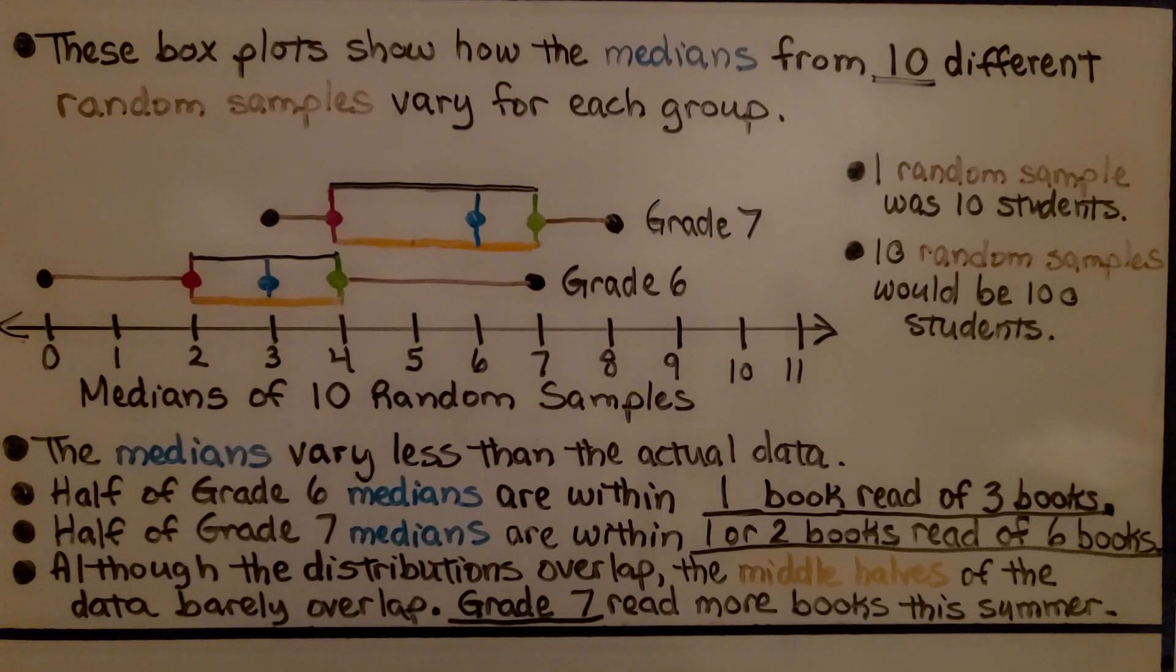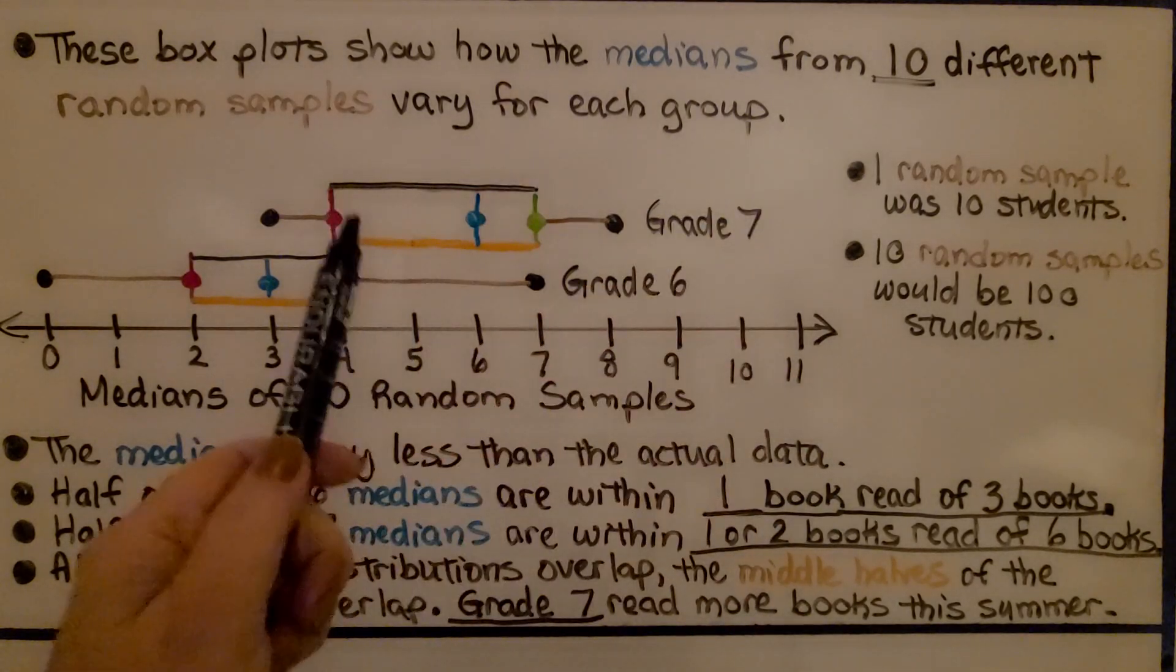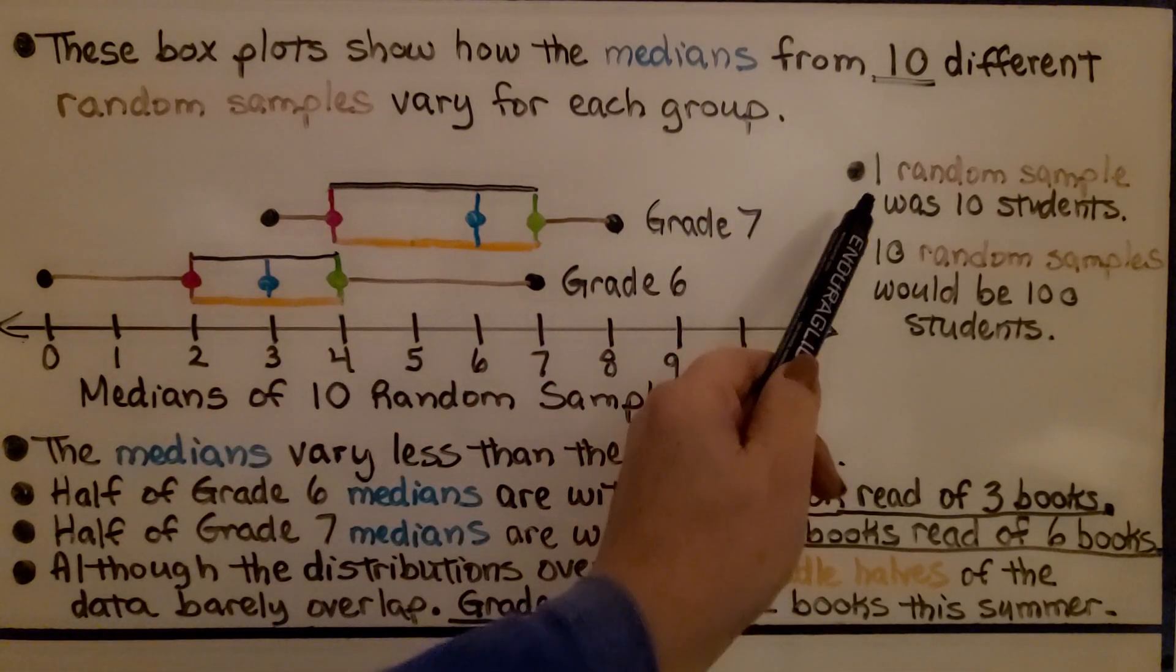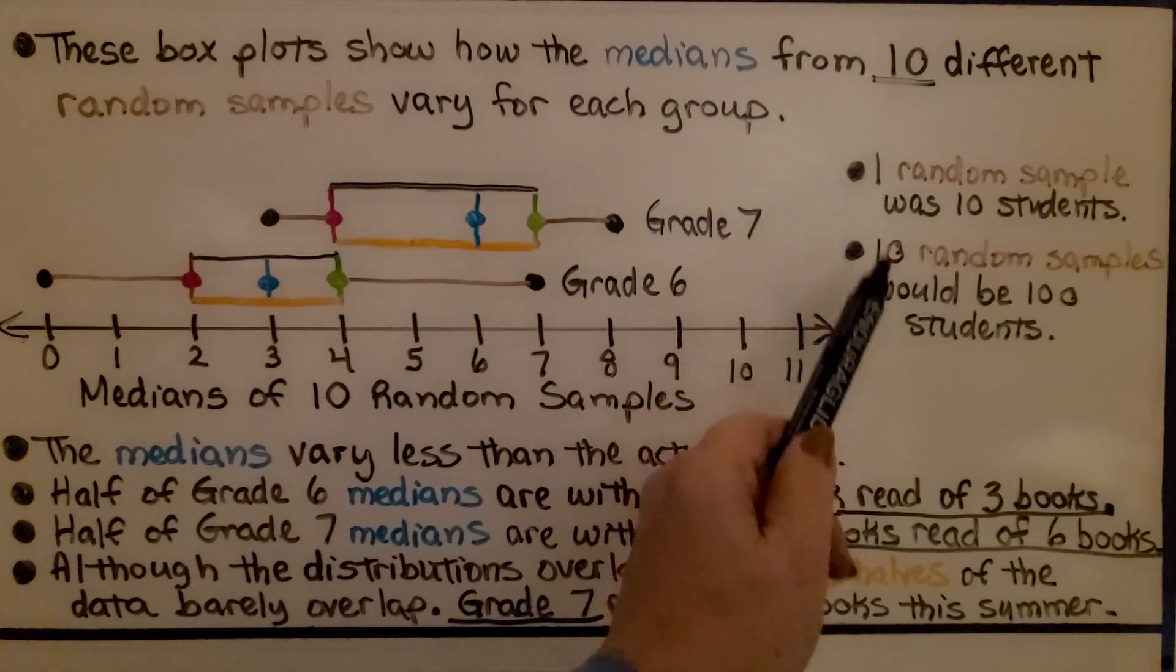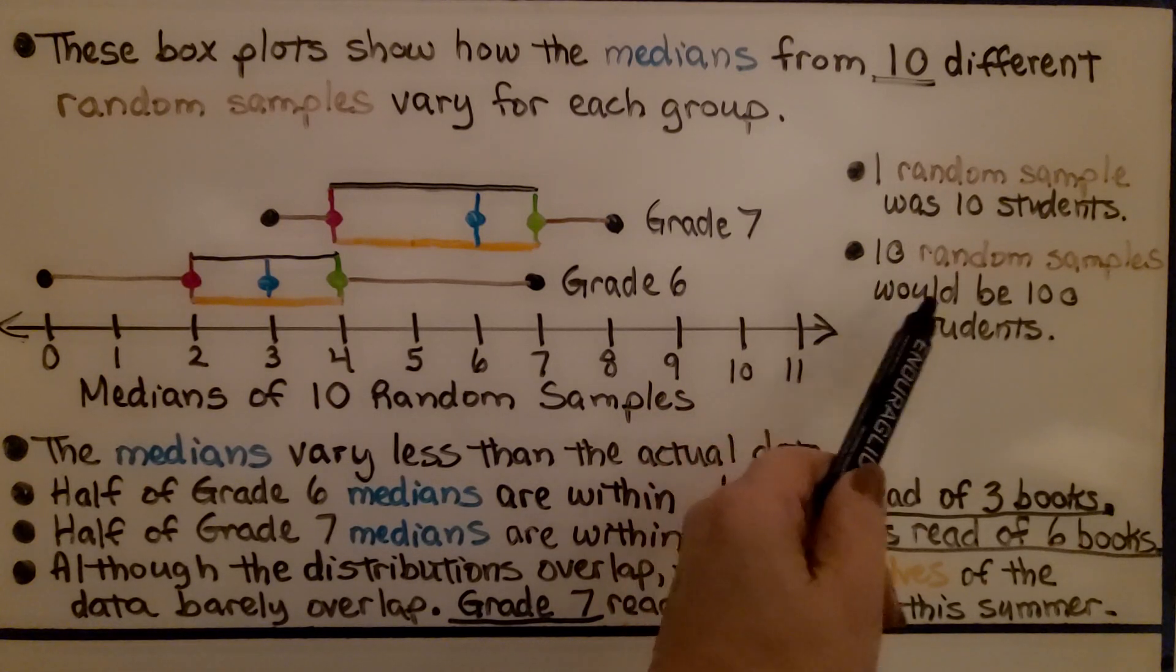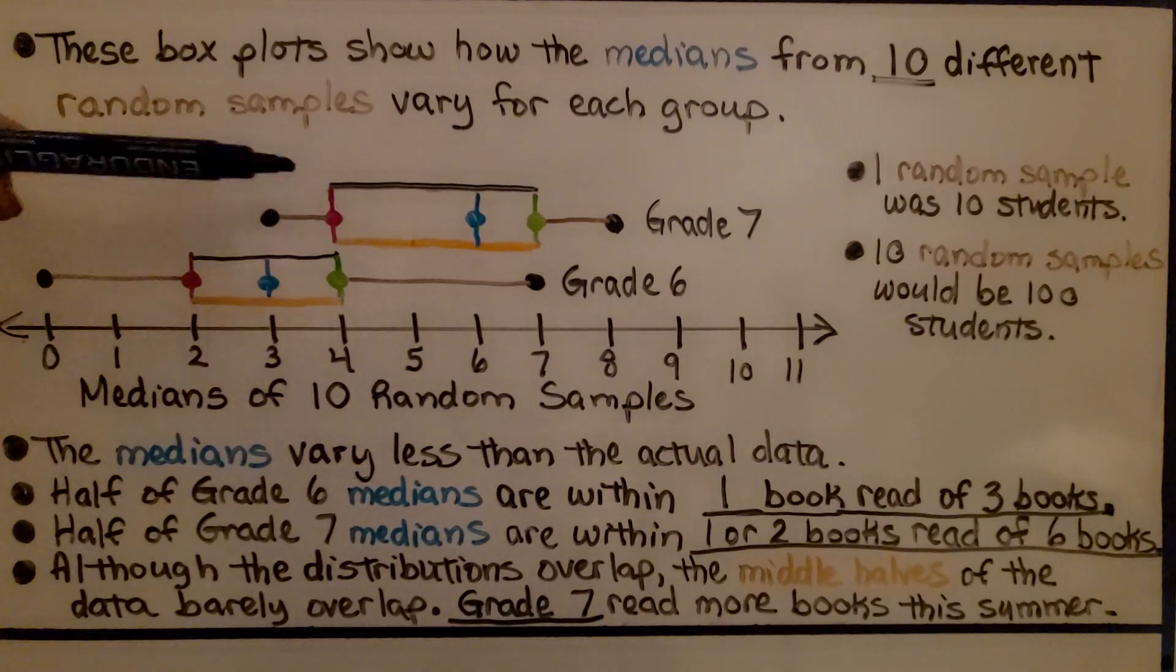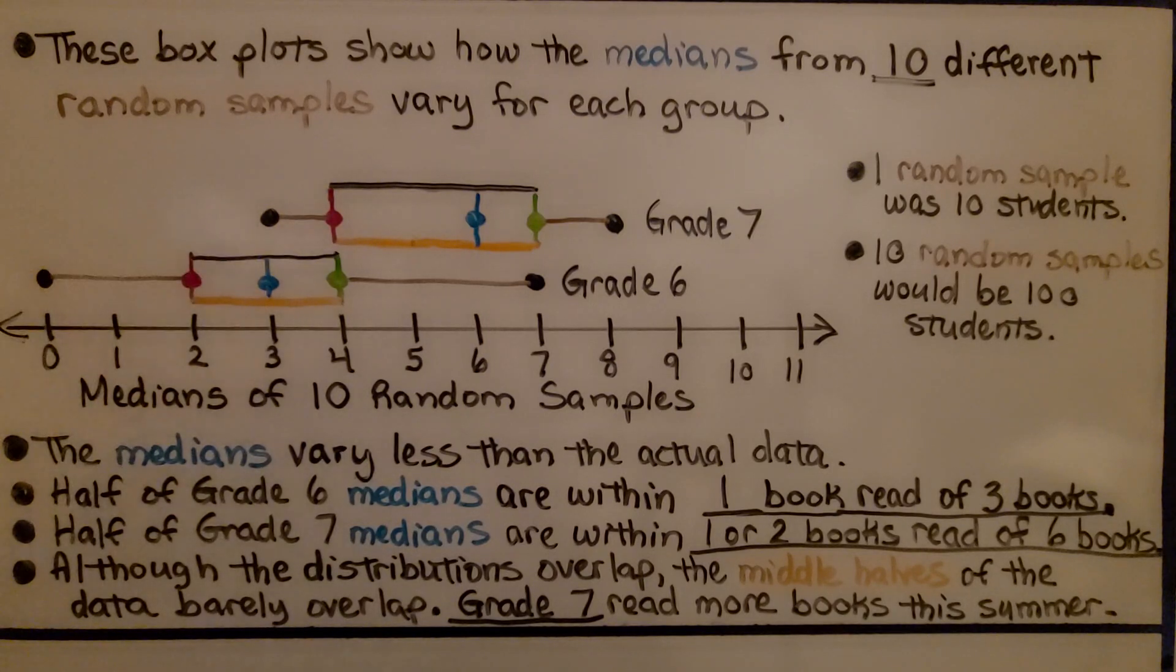These box plots show how the medians from 10 different random samples vary for each group. So this is 10 different random samples. One random sample was 10 students, so that means 10 random samples would be 100 students. And these are the box plots we got for 7th grade and 6th grade. These are the medians of 10 random samples.